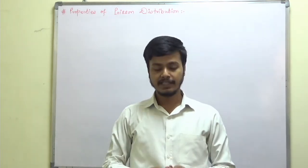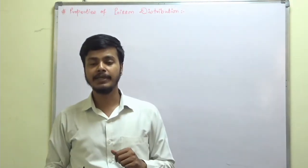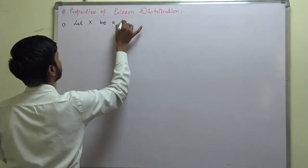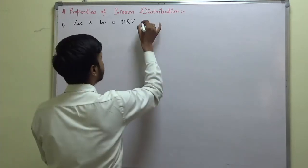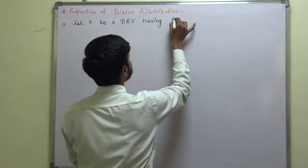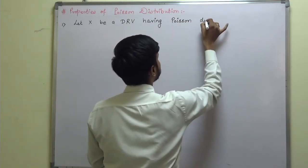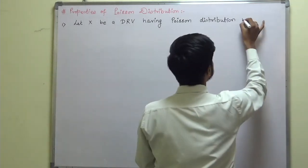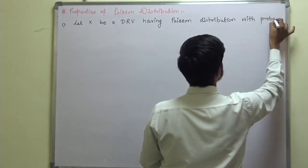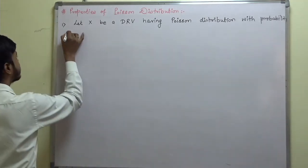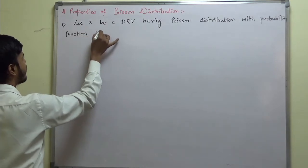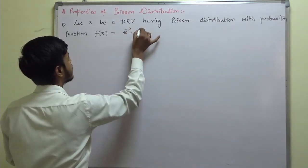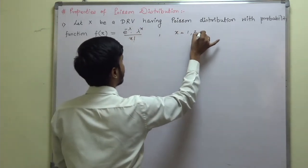Without wasting time, let us take the very first property of this distribution, namely the mean. Let x be a discrete random variable having Poisson distribution with probability function f(x) = e^(−λ) · λ^x / x!, where x varies from 0, 1, 2 and so on.